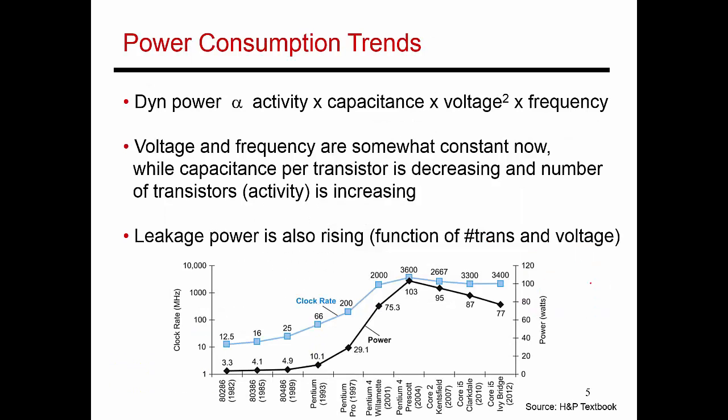To understand this better, we need to understand the power wall. Dynamic power is a function of the activity on the chip — the number of transistors that are switching on and off. It is a function of the capacitance of each of those transistors. It is also a function of the voltage those transistors are operating at — and in fact it's voltage squared. And finally, the frequency: in one second, how many times are those transistors switching on and off?